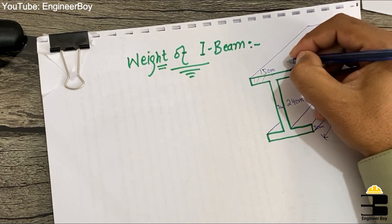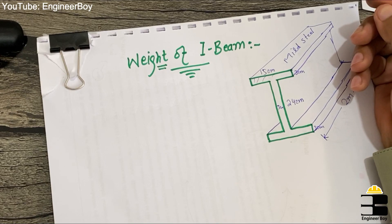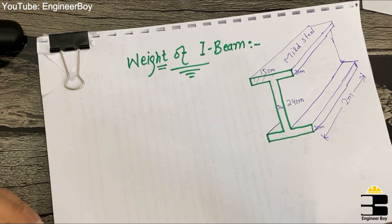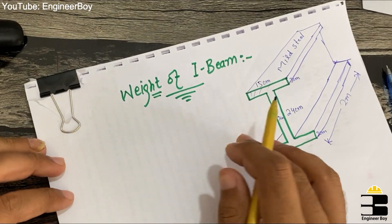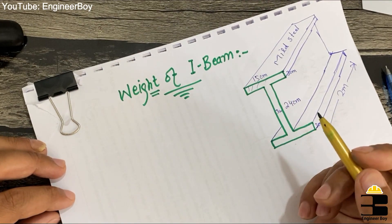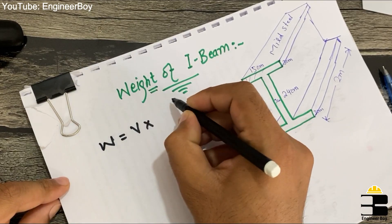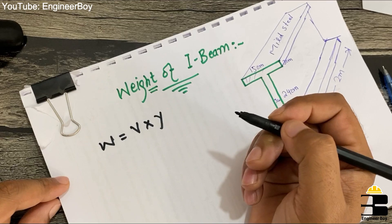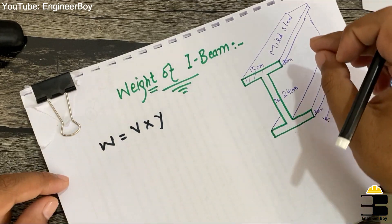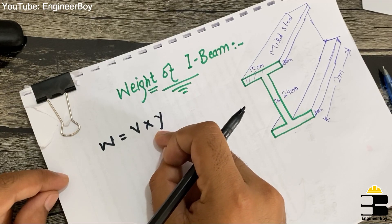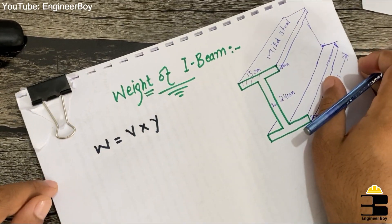This beam is made of mild steel, but it could be made of any other material — concrete, cast iron, or wood. The method we use in this video is applicable for all types of materials. The weight of anything equals its volume times its unit weight or density. Since we need the volume, we first need the cross-sectional area.